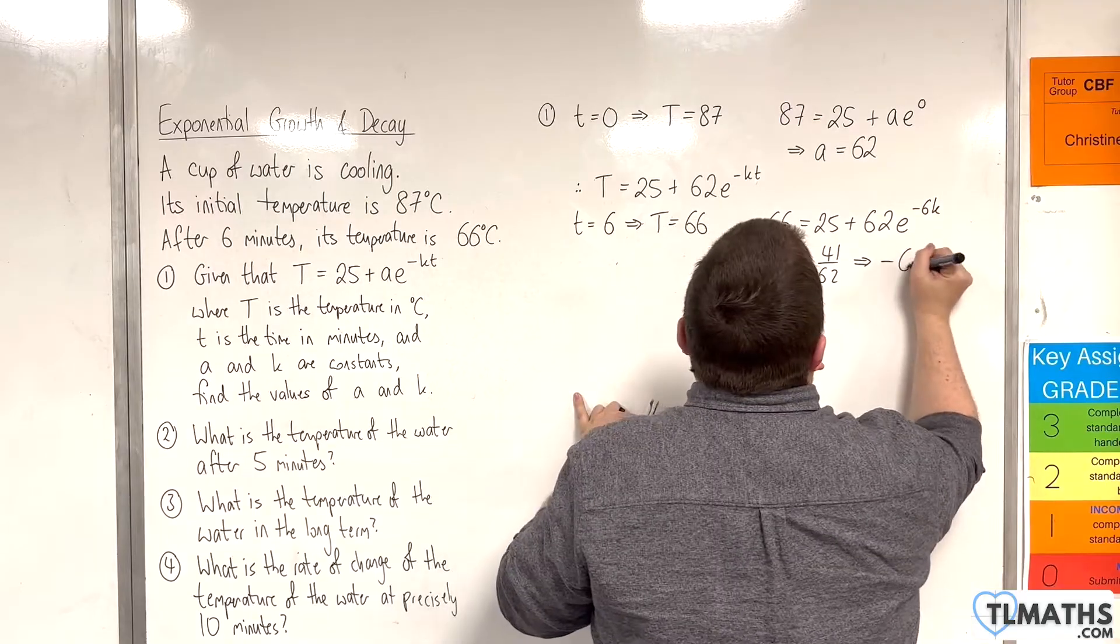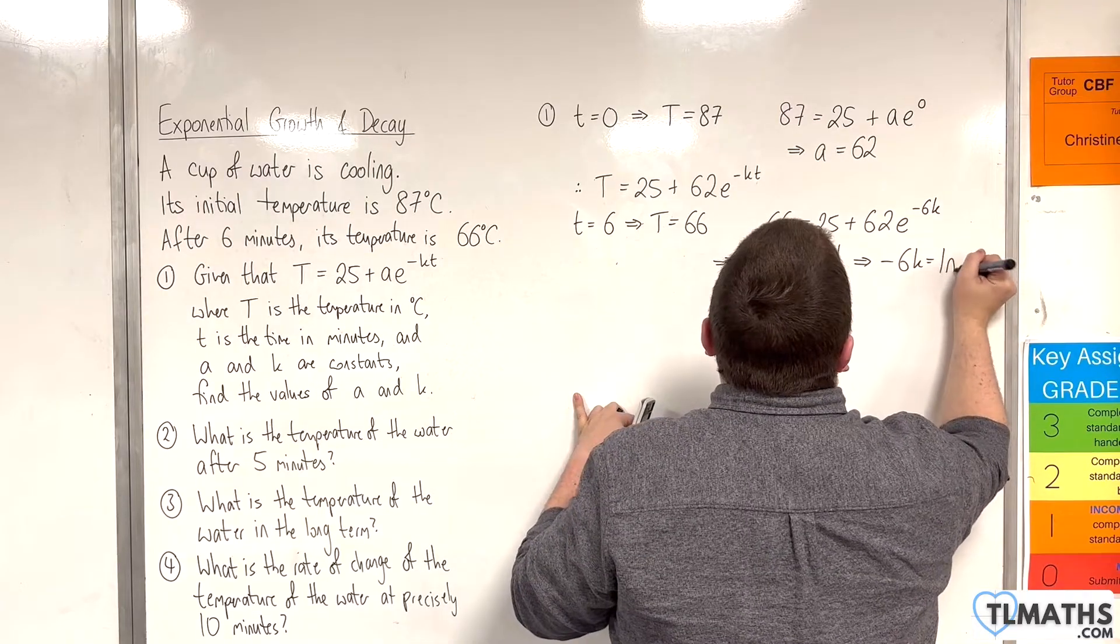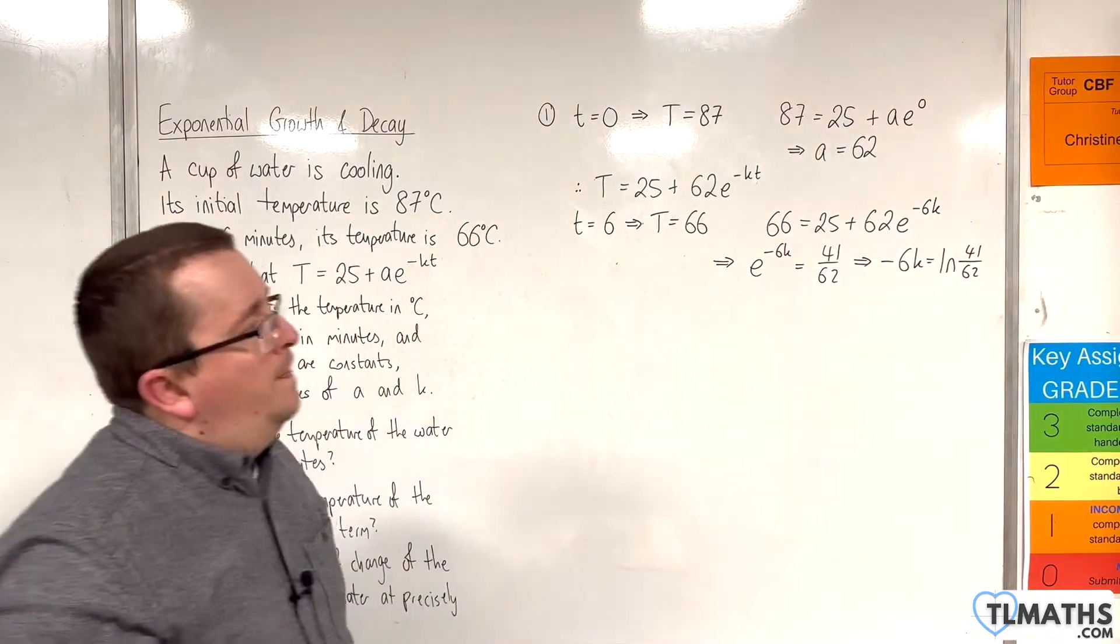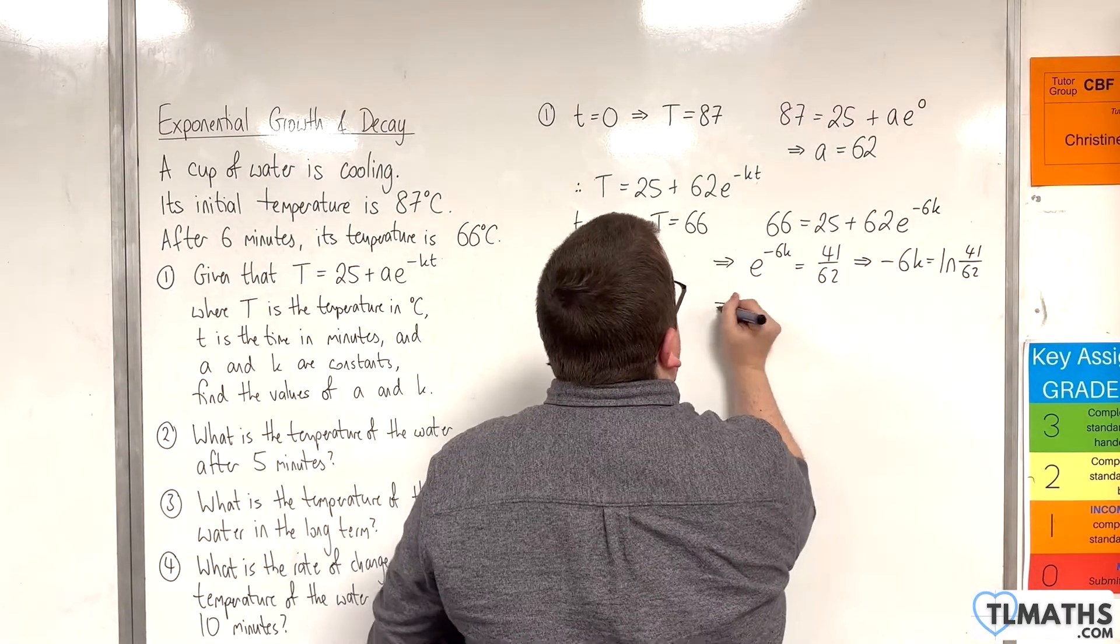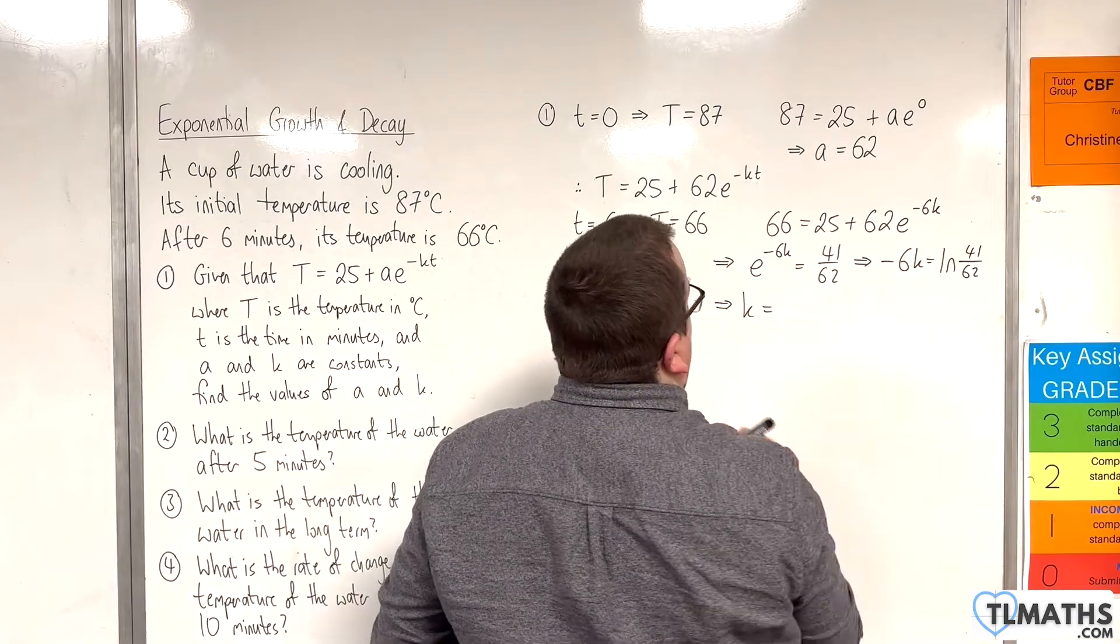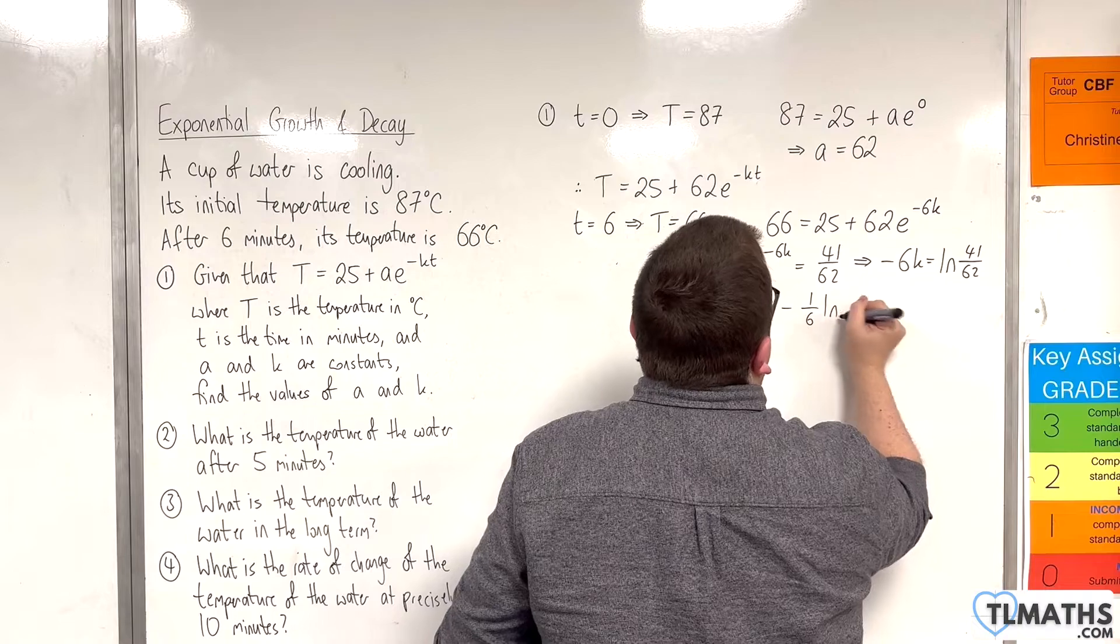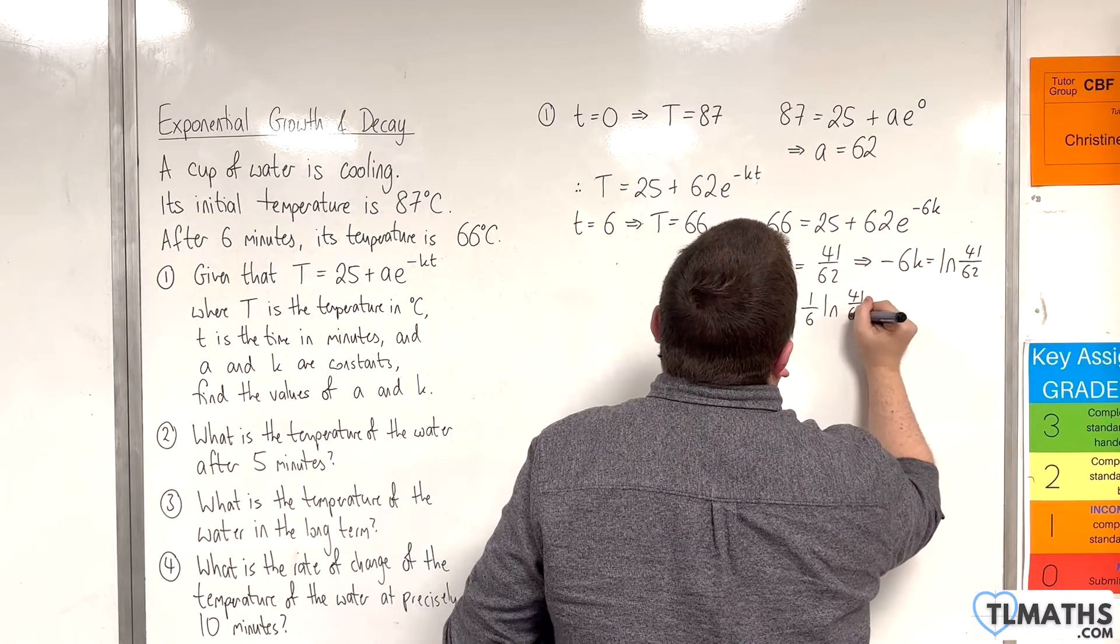So that means that minus 6K would be the natural log of 41 over 62. OK, and so K, dividing both sides by minus 6, is minus 1 sixth natural log of 41 over 62.